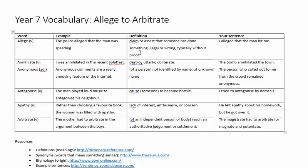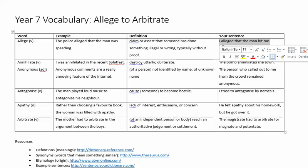First word is allege. Allege is when you claim something has happened, particularly something illegal or wrong. You can actually get sued for saying somebody did something wrong, but you can still report it — you can allege that it happened. You often hear this in the news: the alleged offender was taken to court. So if I allege that the man had hit me, basically I'm saying that's my story.